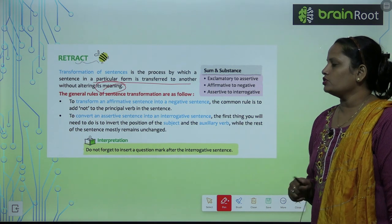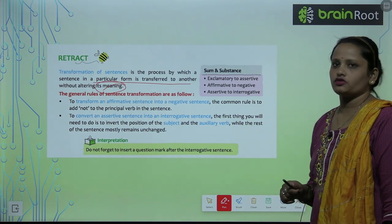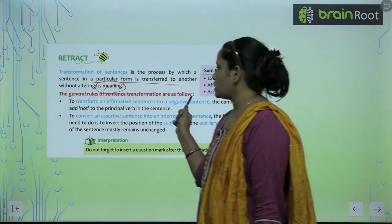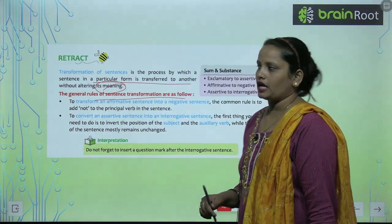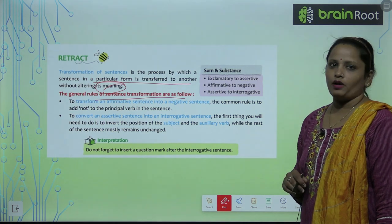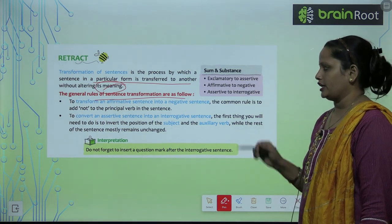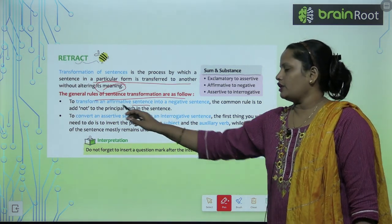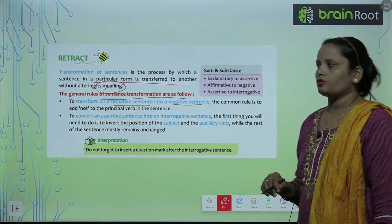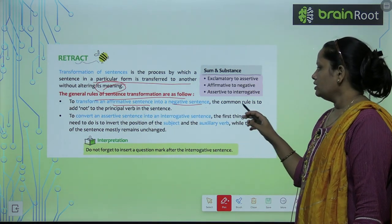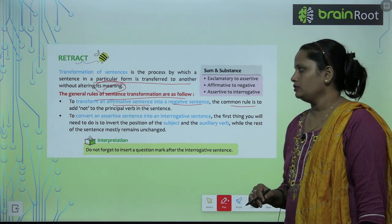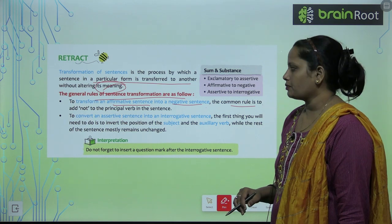The general rules of sentence transformation are as follows. So kuch rules hai sentence transformation ke, that we will learn now. To transform an affirmative sentence into a negative sentence — ek affirmative sentence ko agar hume negative sentence mein convert karna hai — the common rule is to add 'not' to the principal verb in the sentence.